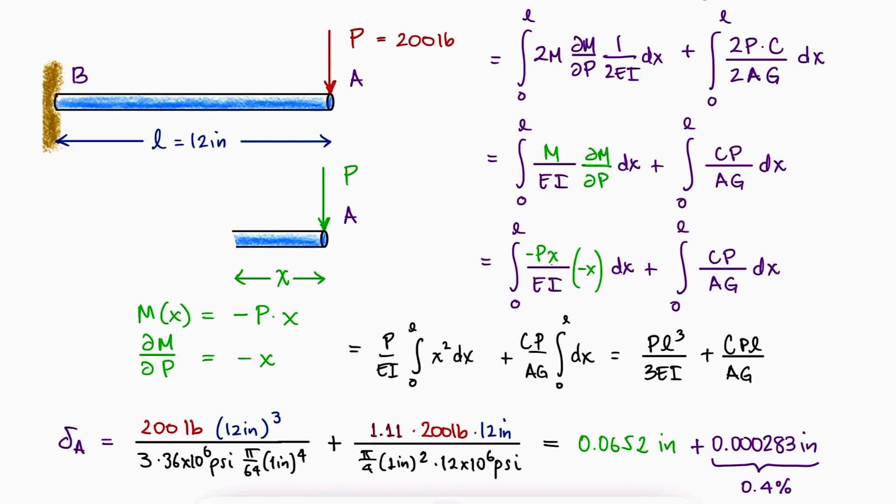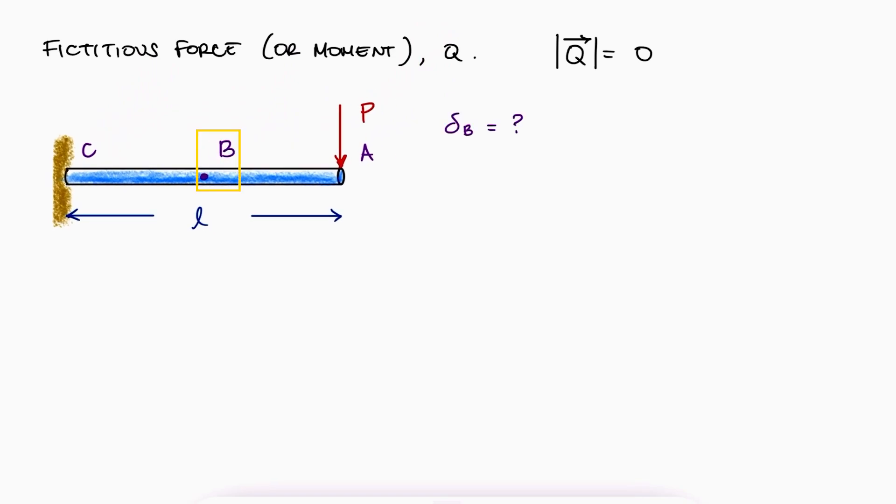With this simple example, we see that we can use Castigliano's theorem to calculate the deflection in the direction of a force for any point along the structure and due to any and every type of strain energy. But what if there's not an external force located exactly at the point where we want to calculate its deflection? In this case, we make use of a fictitious force q, which is represented by a vector force q of magnitude zero. Let's say we want to calculate the deflection at point B, halfway between the fixed end at C and the free end at A of this cantilever beam, subjected to a load p at the free end.